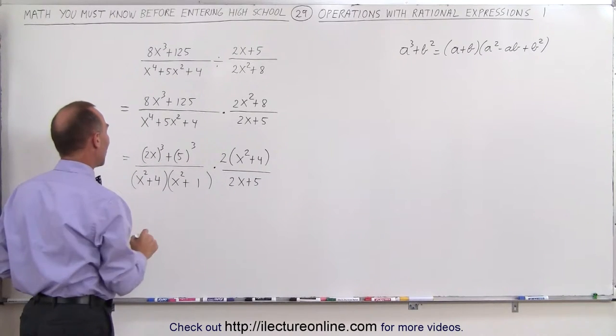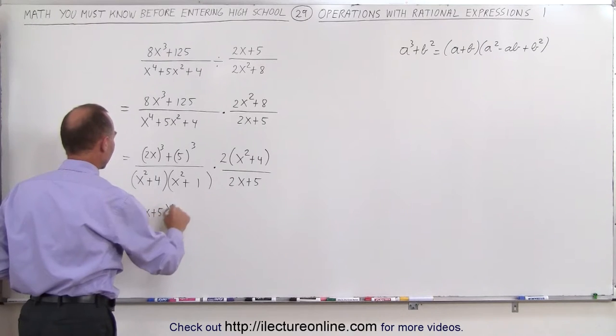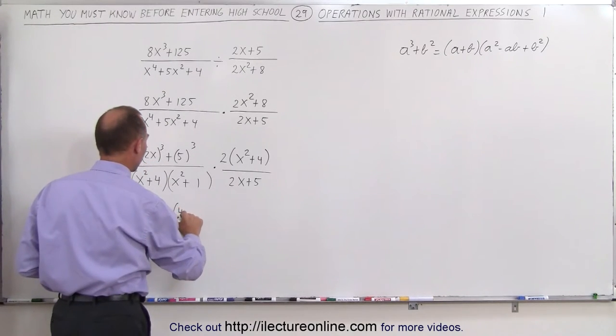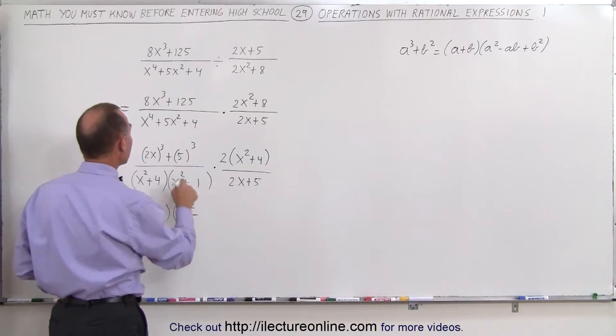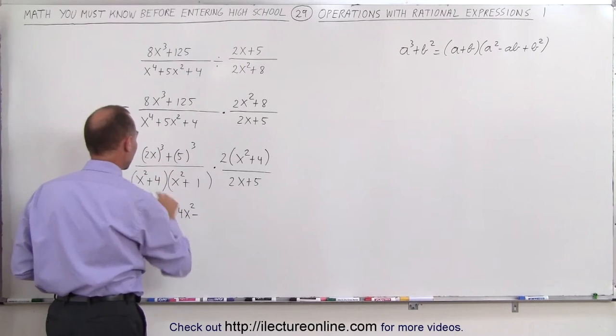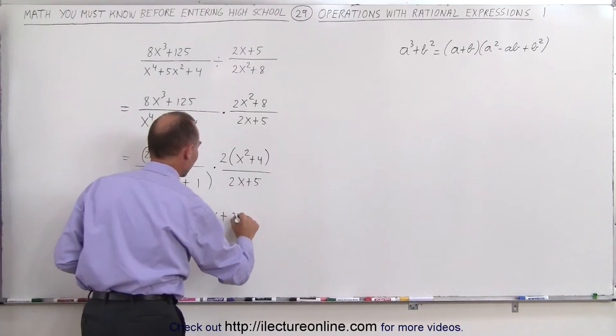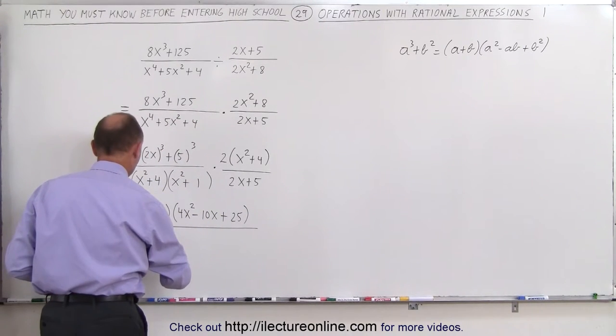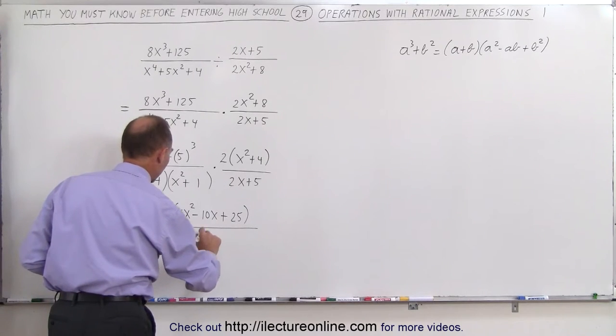a is 2x and b is 5. So that becomes 2x plus 5 times 2x squared. So that becomes 4x squared minus a times b, 5 times 2x, which is 10x plus b squared, which is 25 divided by what we have here, which is x squared plus 4 times x squared plus 1,